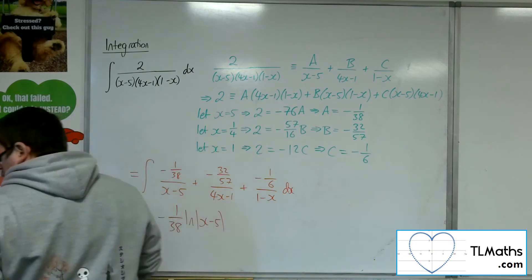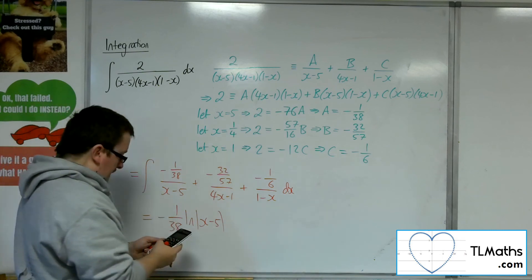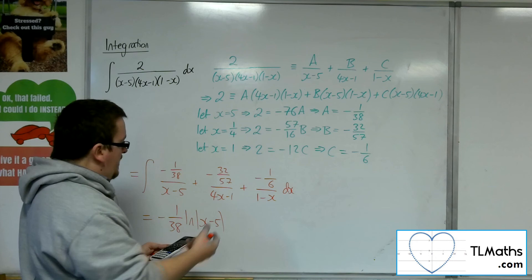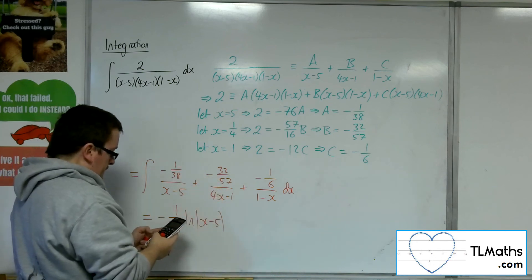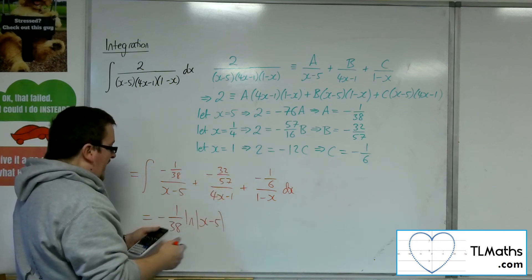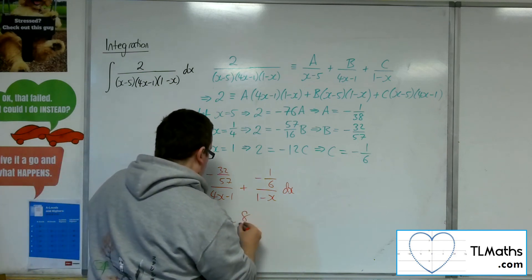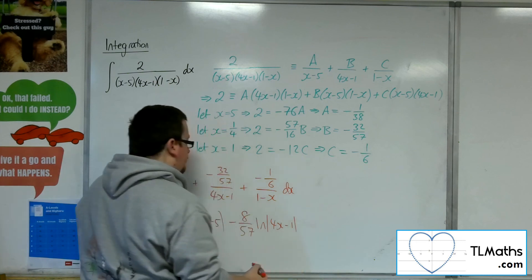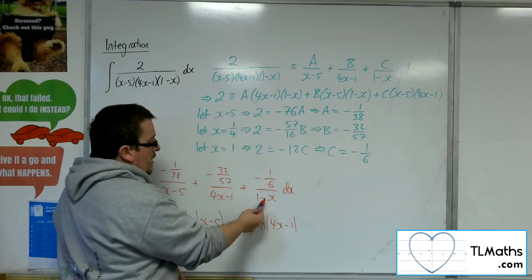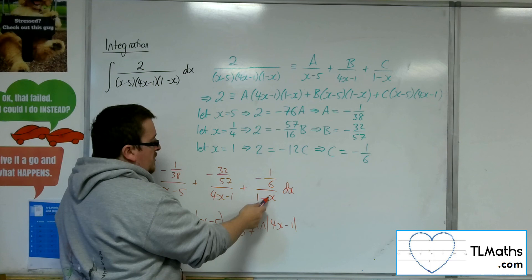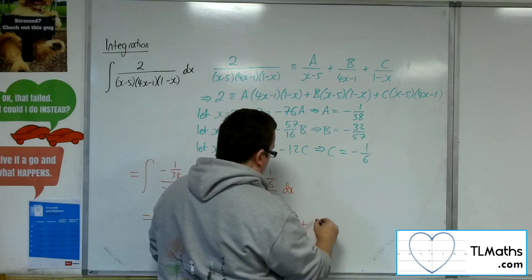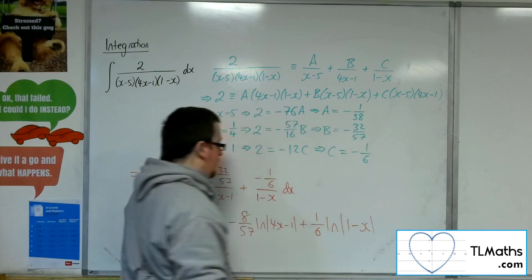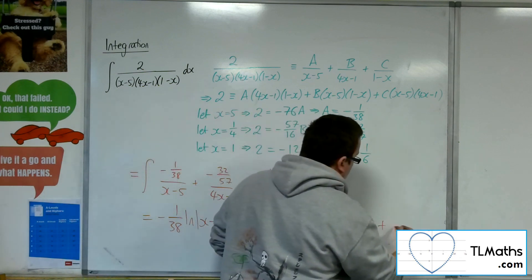For the B term, we have -32/57 divided by 4, giving -8/57 log(4x-1). For the C term, the minus cancels the negative on top, giving +1/6 log(1-x) plus the constant of integration.